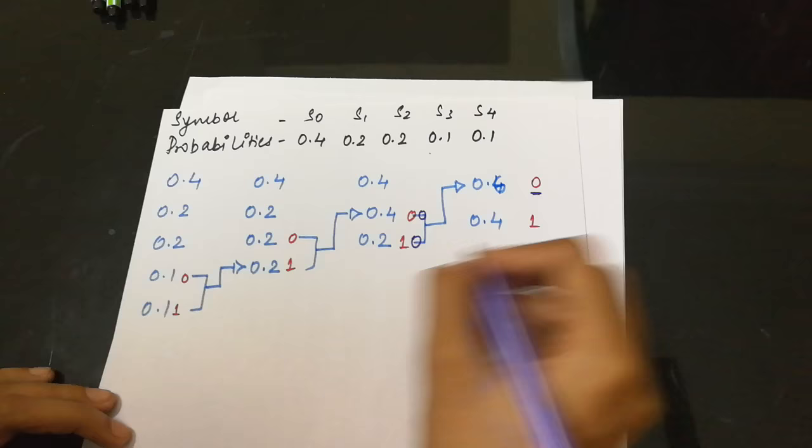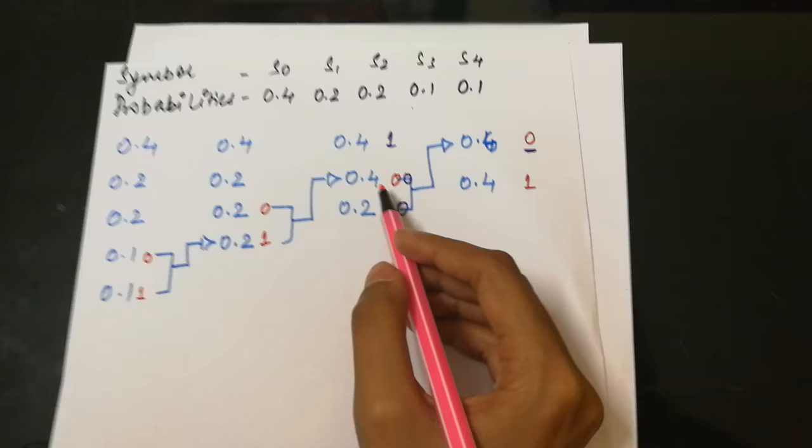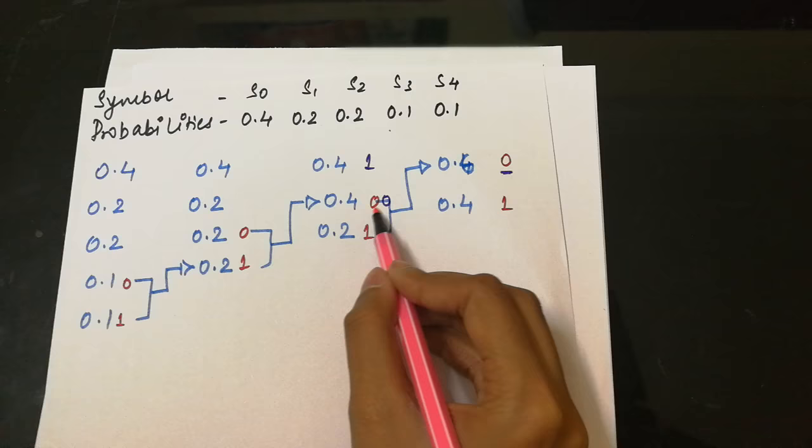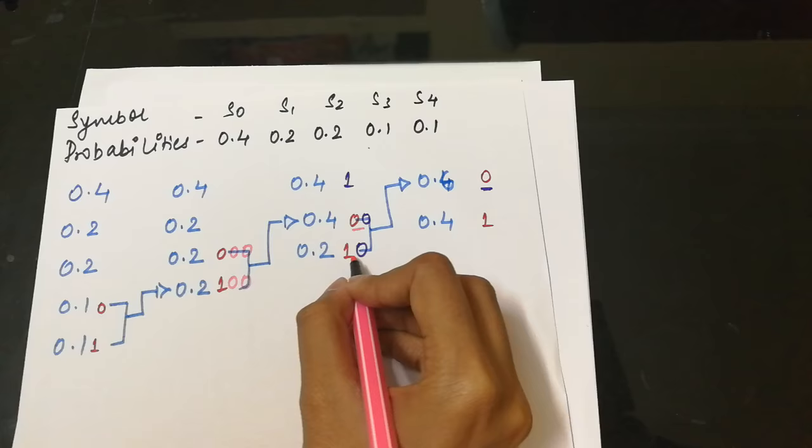Now 0.4 is the result of 0.2 and 0.2. In front of 0.4 we have these two, so these two would be written down here, and this 1 0 is here.